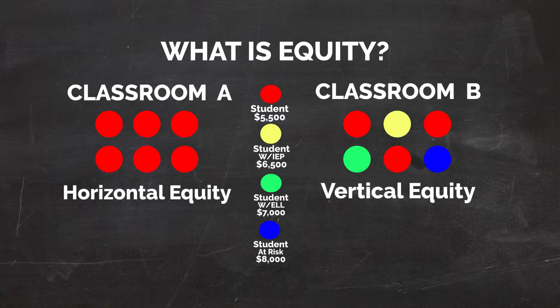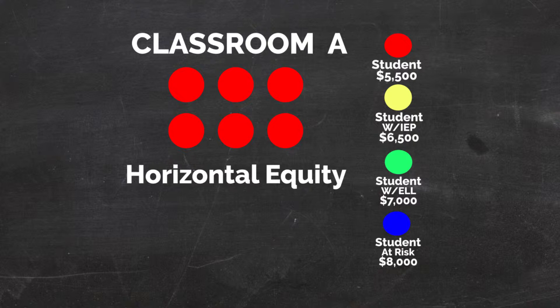There are two types of equity that we deal with in the Clark County School District or any school district. There's horizontal equity, and that's treating similar students similarly or providing similar funding for similar students. And there's vertical equity, or providing dissimilar students with dissimilar funding. These graphics show some hypothetical examples of classrooms and the funding provided to the students within each classroom. Horizontal equity could be ensuring that your school district provides a similar amount of funds for a similar group of people — for example, ensuring that all first graders at elementary schools receive the same amount of funding, or that all students in career and technical programs receive the same amount of funding.